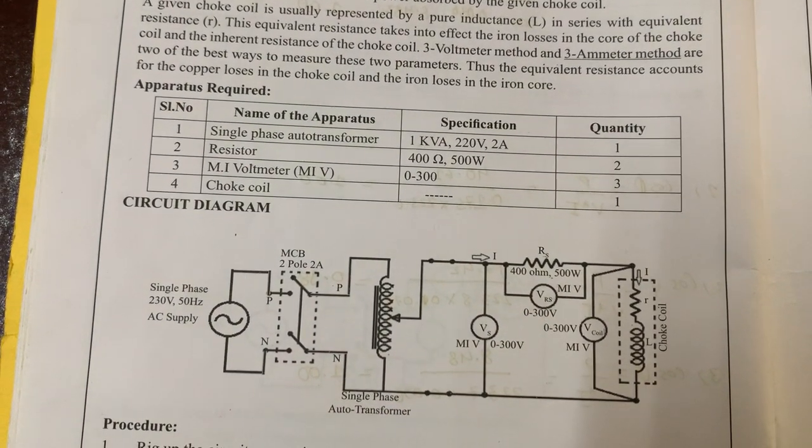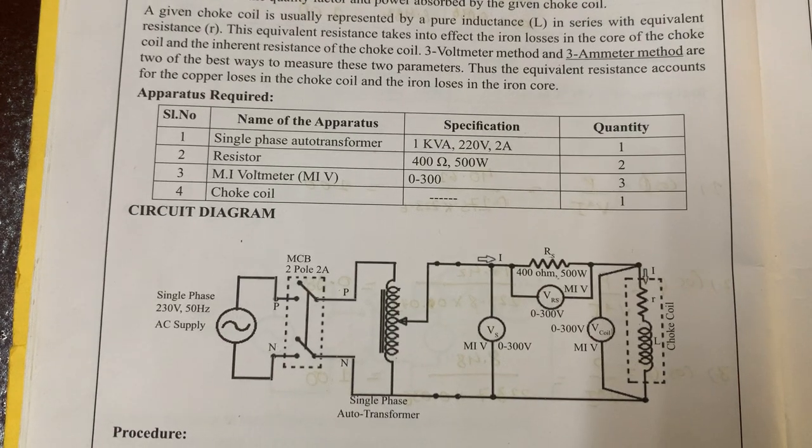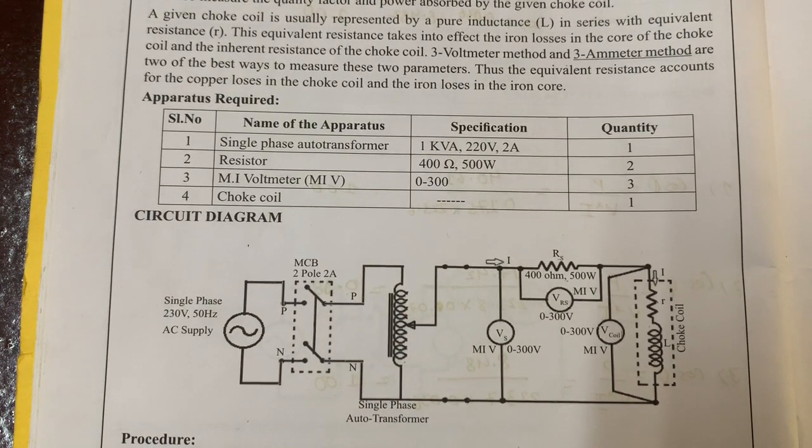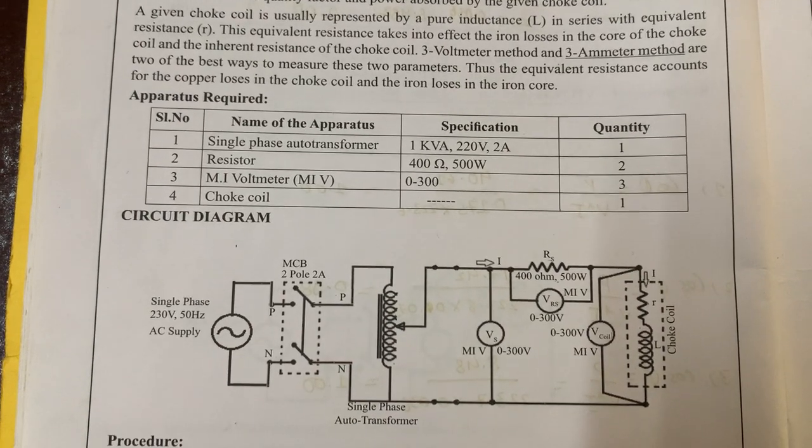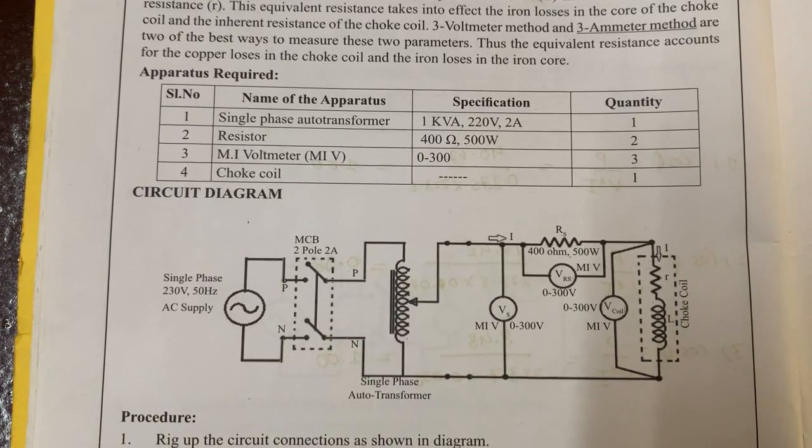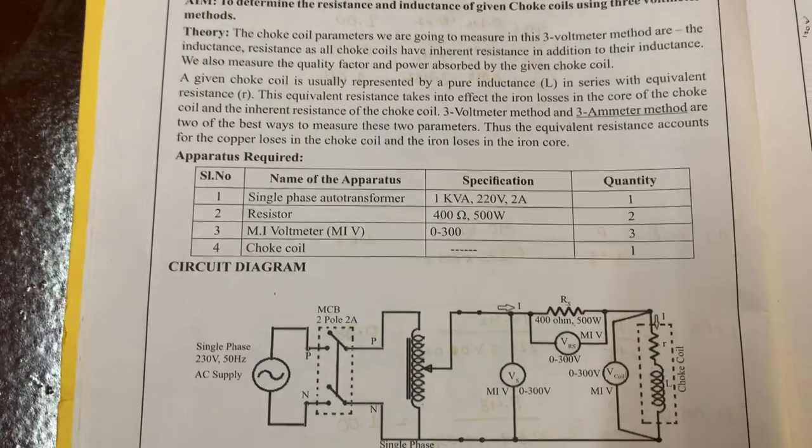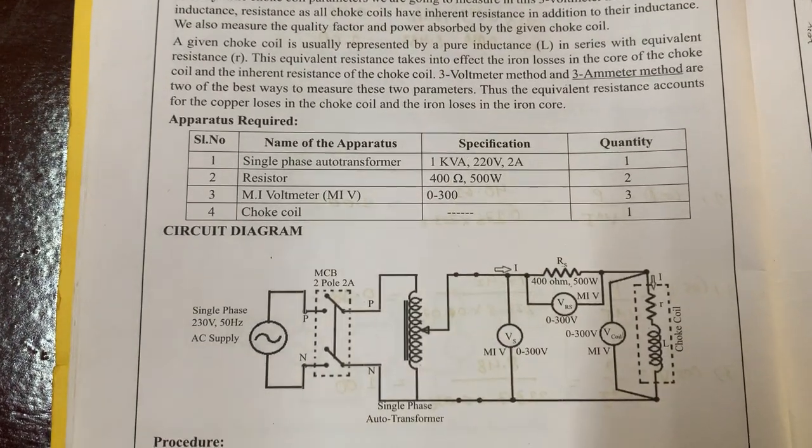Then you have resistor RS connected in series with the autotransformer, followed by the choke coil. It's connected in series with resistor RS and then from there you connect back to the supply. This is the basic schematic of the experiment.